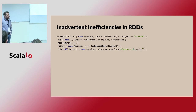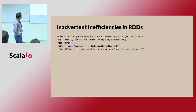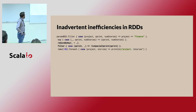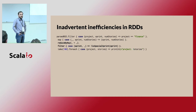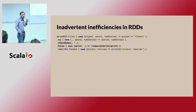What I mean by inadvertent inefficiencies in RDDs: for example, I have an RDD called pastRDD, applying a filter with a case class for project, sprint, and number of stories — filtering where project is 'finance', then mapping to a key-value pair of sprint and number of stories, then doing reduceByKey, then applying a filter on sprint. In this example, the filter could be done before the reduceByKey. This creates a performance penalty. If you use a DataFrame instead, the Tungsten and Catalyst optimizer will optimize your execution model automatically.